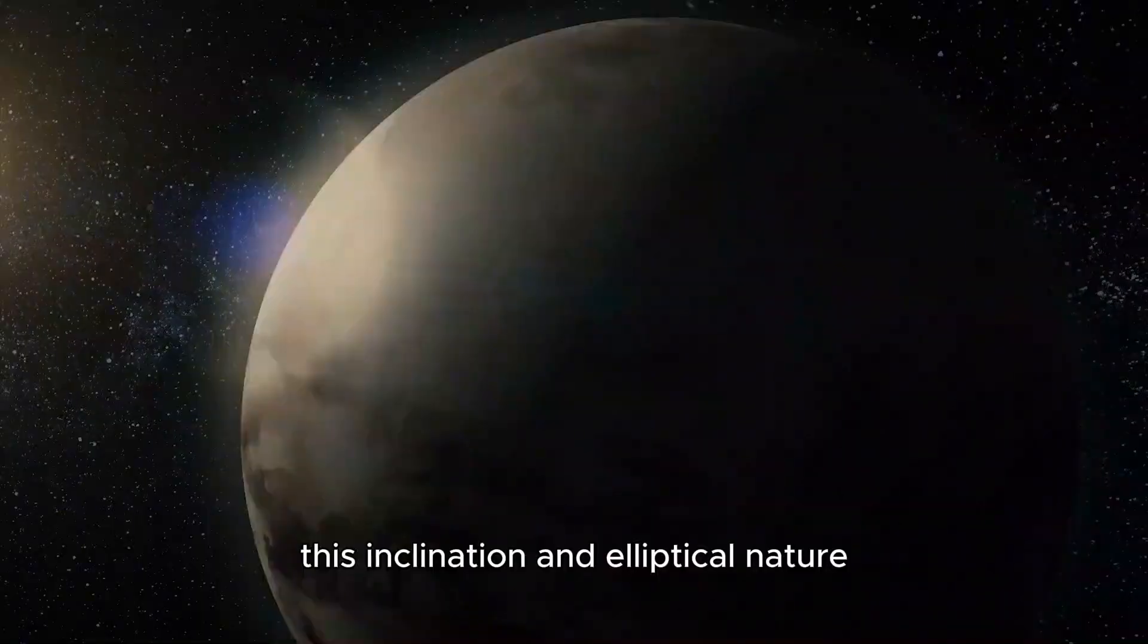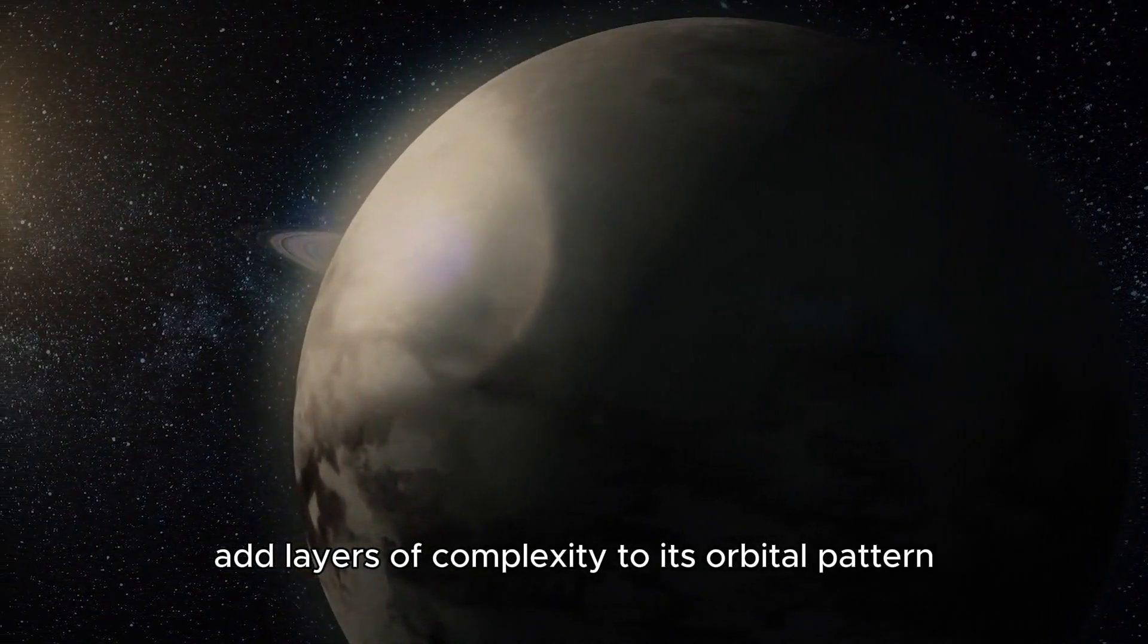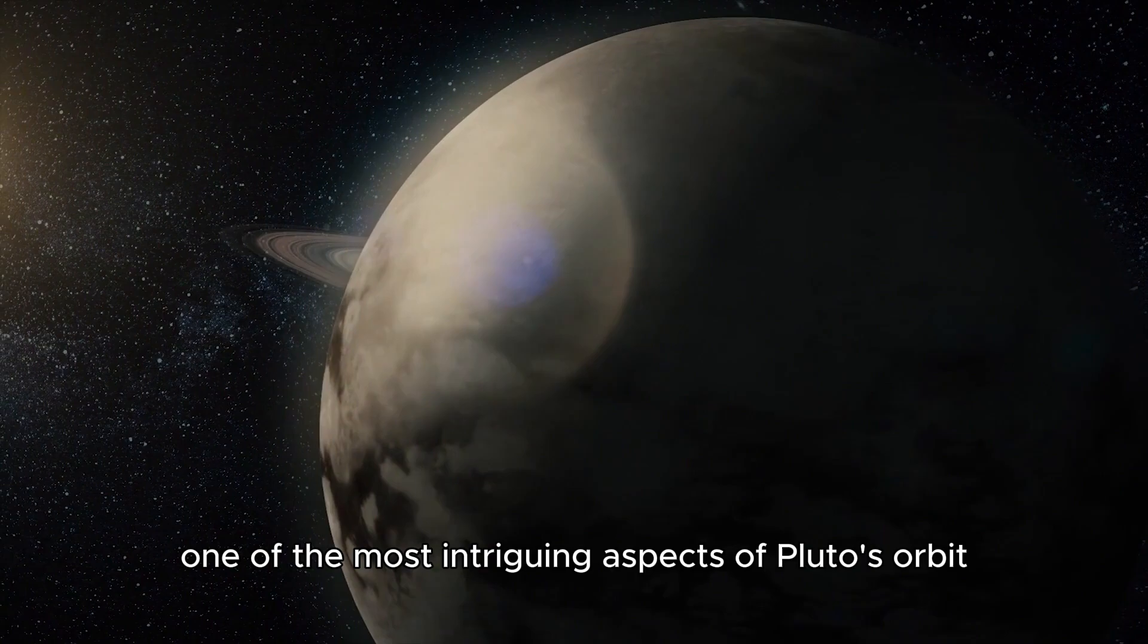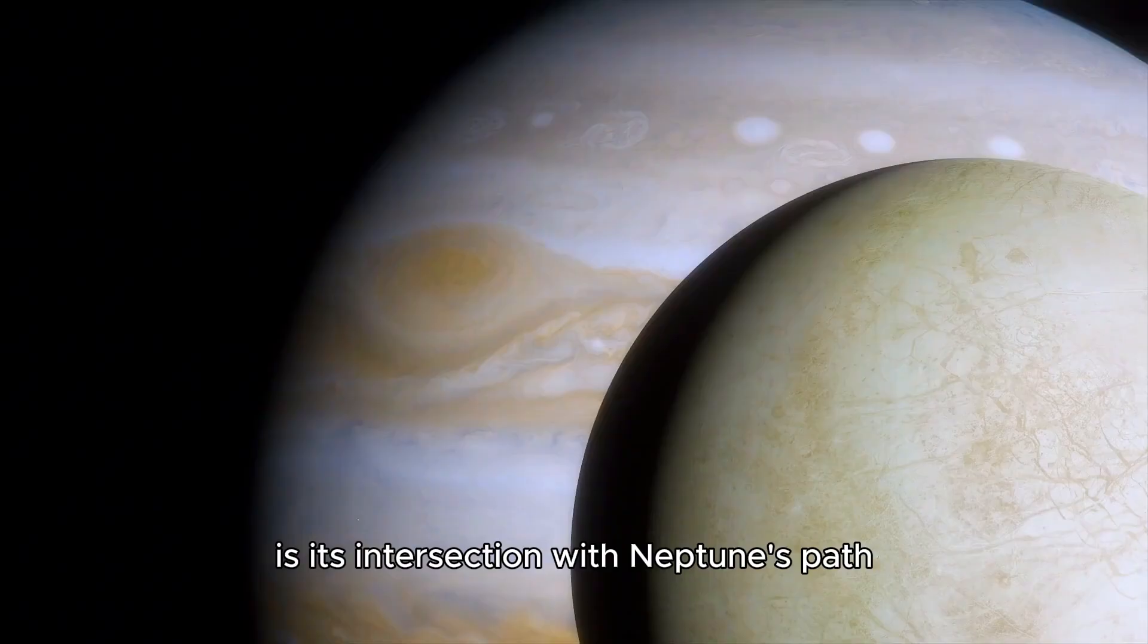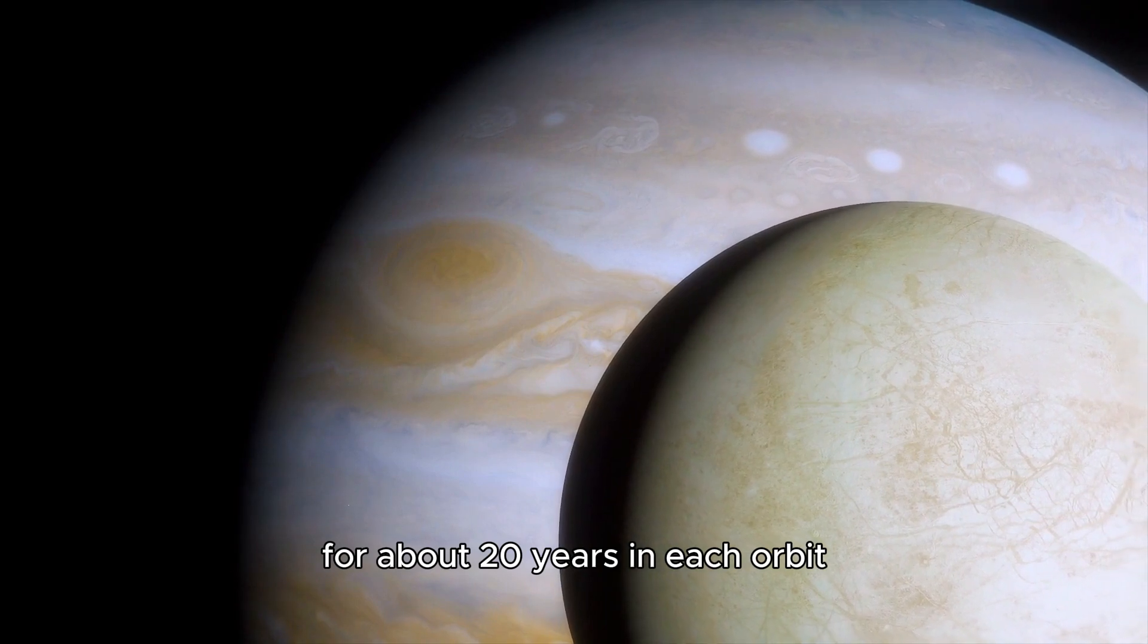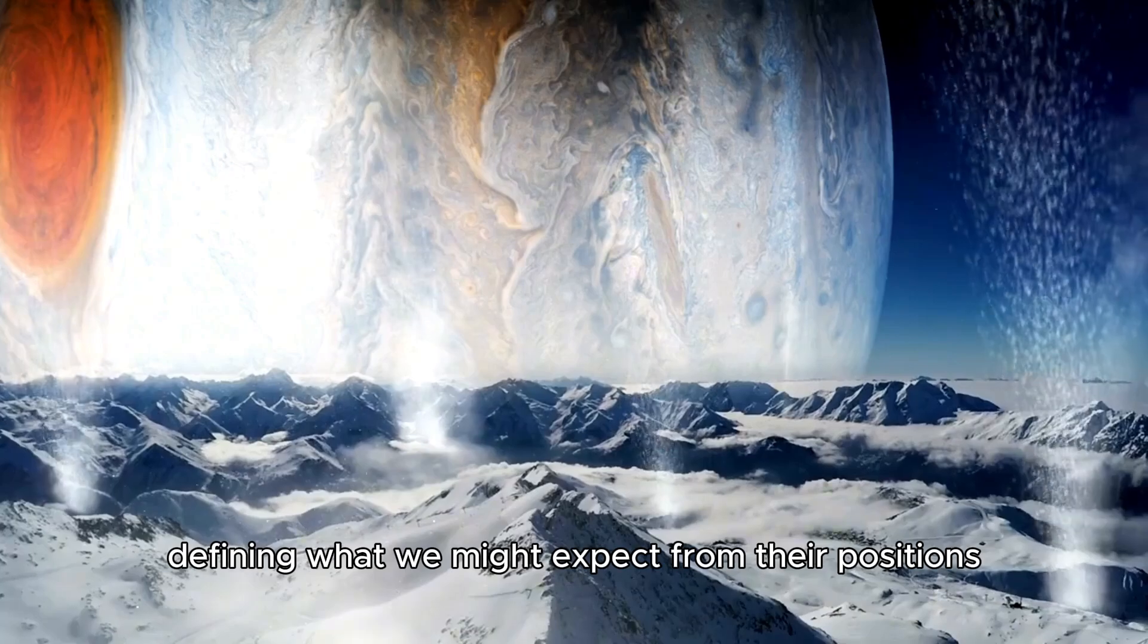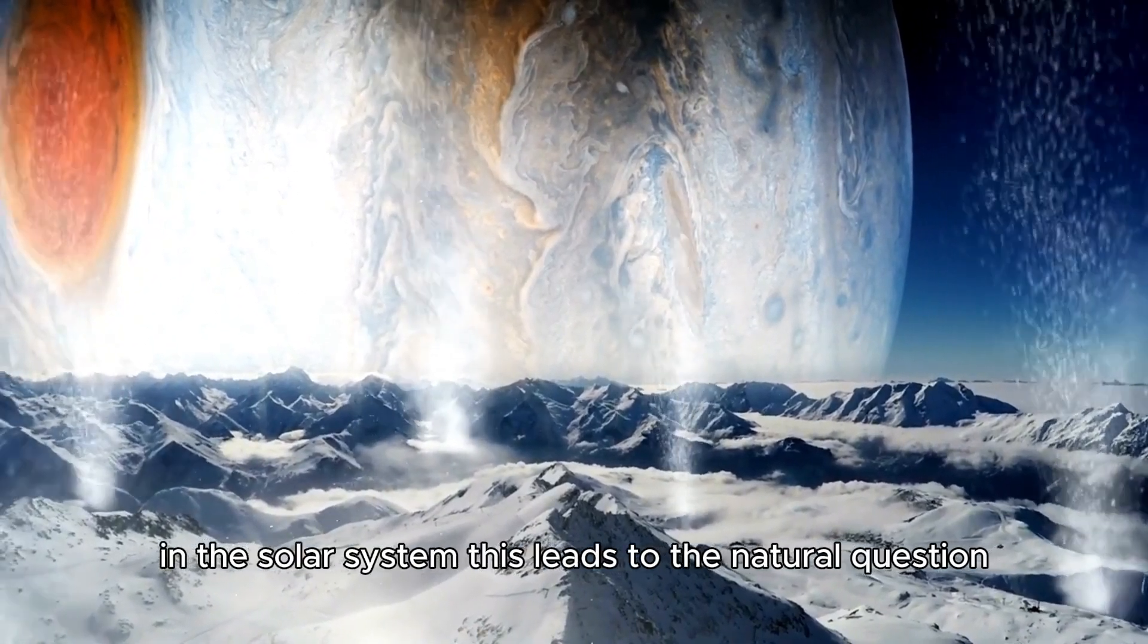The path Pluto traces is much steeper compared to the other planets. This inclination and elliptical nature add layers of complexity to its orbital pattern. One of the most intriguing aspects of Pluto's orbit is its intersection with Neptune's path. For about 20 years in each orbit, Pluto actually comes closer to the Sun than Neptune, defying what we might expect from their positions in the solar system.